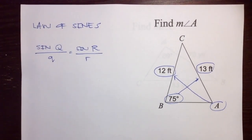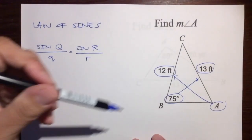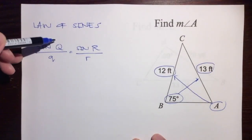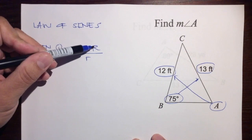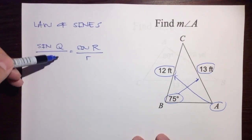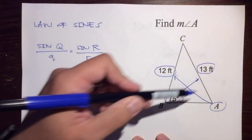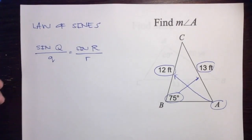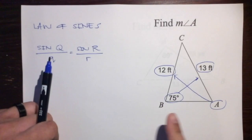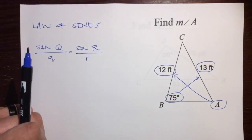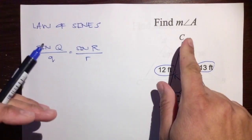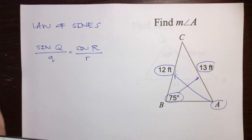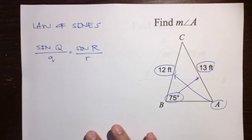If you watched the previous video on the law of sines, you just use it. It's angle over opposite side equals angle over opposite side. Here's the angle Q with its opposite side, angle R with its opposite side. We can substitute these letters with these variables and numbers. The only difference from the previous video is that this time we're going to use the law of sines to find an angle, and when finding angles, we use the inverse sine — not regular sine.